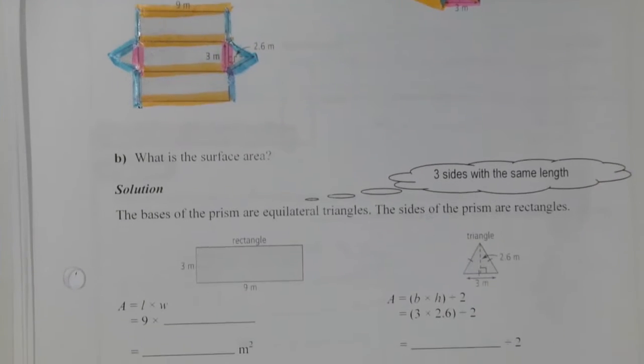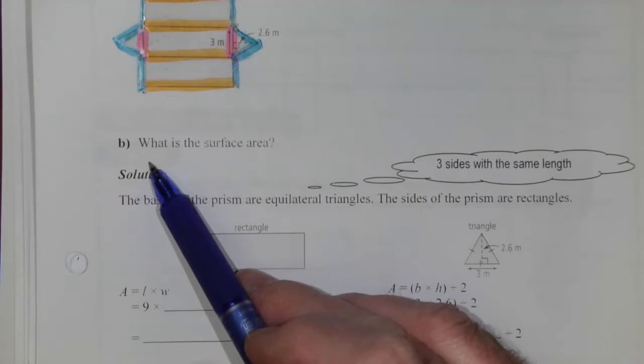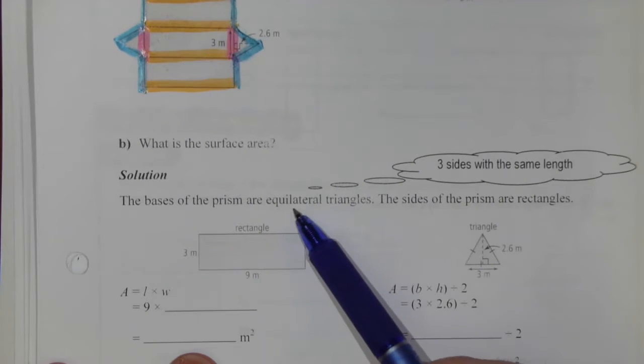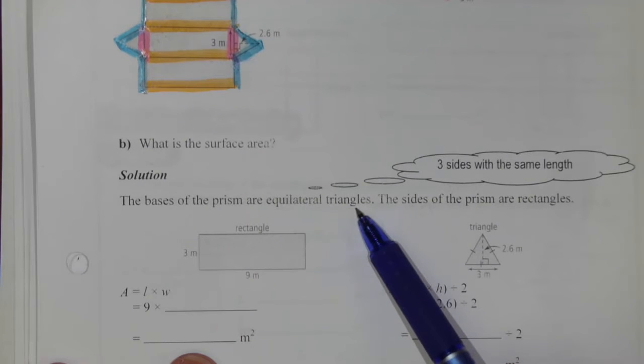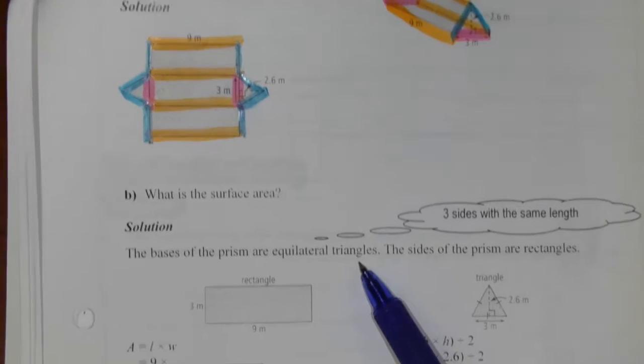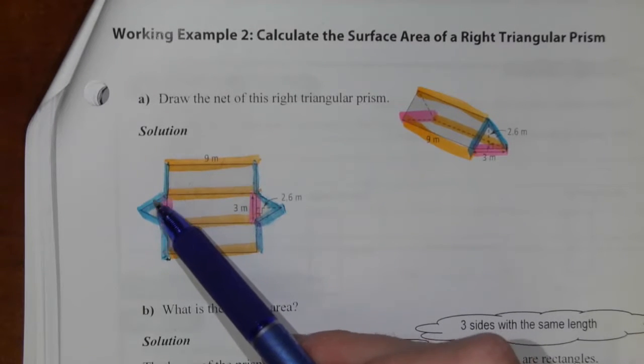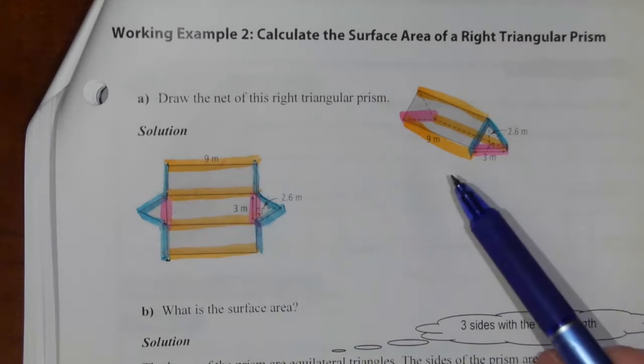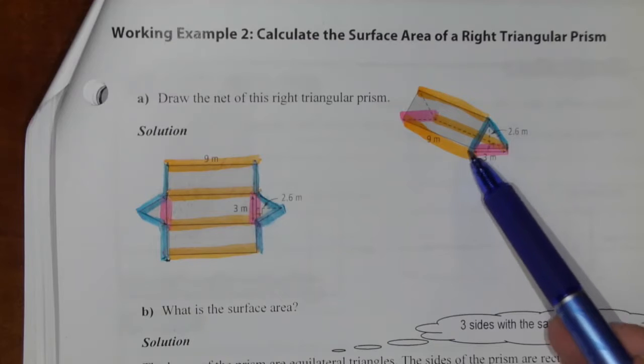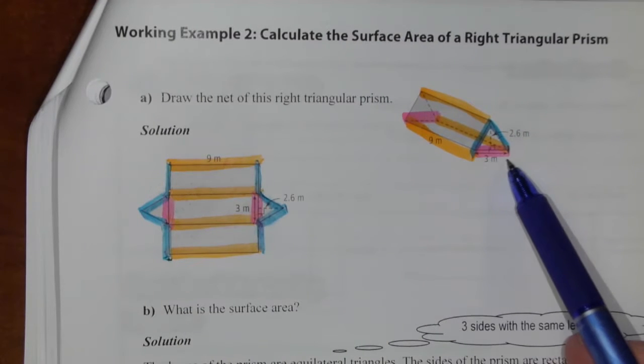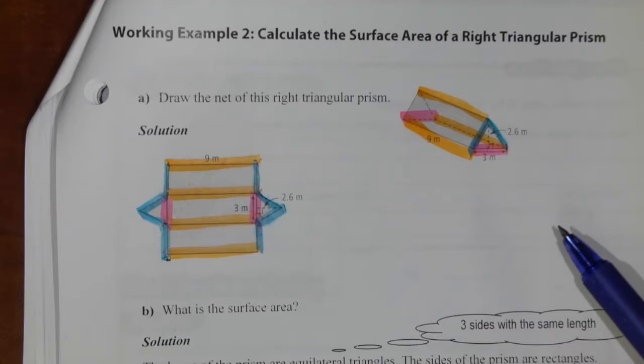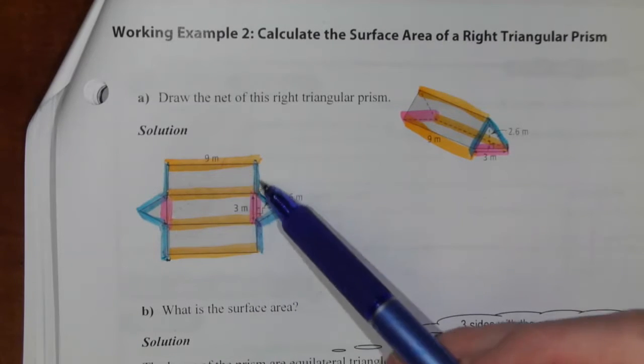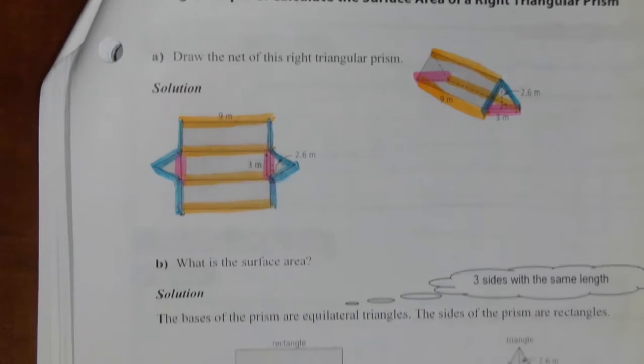Now, in this particular solution, we're being asked to find the surface area. So the bases of the prism are equilateral triangles. Oh, that's new information. That means all three sides of these triangles are the same. And if all three are the same, and we're told that this one is 3 meters, then these blue ones are also 3 meters. So the blue and the pink are all 3 meters, and the orange is 9 meters.